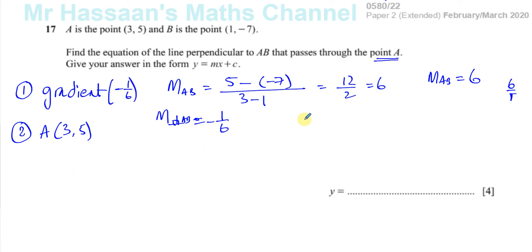So now we can work out the equation of the line. There's two different methods to use. I'll show you the way that I like first. Y minus Y1 equals M times X minus X1. So Y minus 5 equals M which is minus 1 sixth times X minus 3.